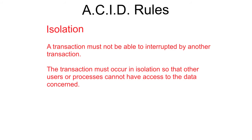In practical terms, database management systems enforce this by carrying out record locking. The record or records being used by the transaction are locked and effectively placed in an invisible or read-only state. Only once the transaction has been fully completed is the lock removed.